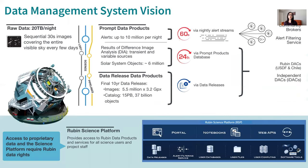Here's the overview of our data management system. Every night, the telescope will take sequential images — about 20 terabytes of data every night. This data will be transferred to our data access center in the United States and processed right away to generate prompt data products. For anything that changes — transient sources, variable sources, moving sources — alerts will be issued and published within 60 seconds after the shutter is closed, accessible through alert filtering service and community brokers. The rest of the prompt data products will be made available within the next 24 hours.